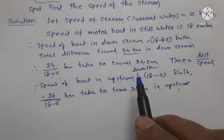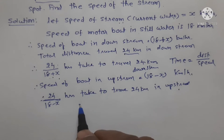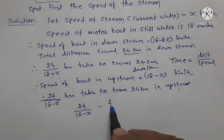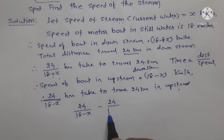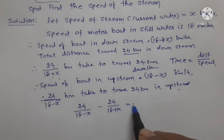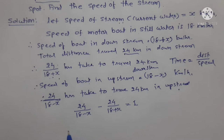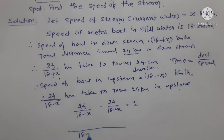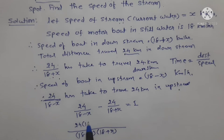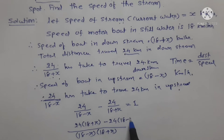The speed of upstream is less, so it takes more time. The difference in time is one hour more. Therefore: 24 upon (18 minus x) minus 24 upon (18 plus x) equals 1. Taking the LCM, which is (18 minus x) into (18 plus x), cross multiplication gives: 24 into (18 plus x) minus 24 into (18 minus x) equals 1.